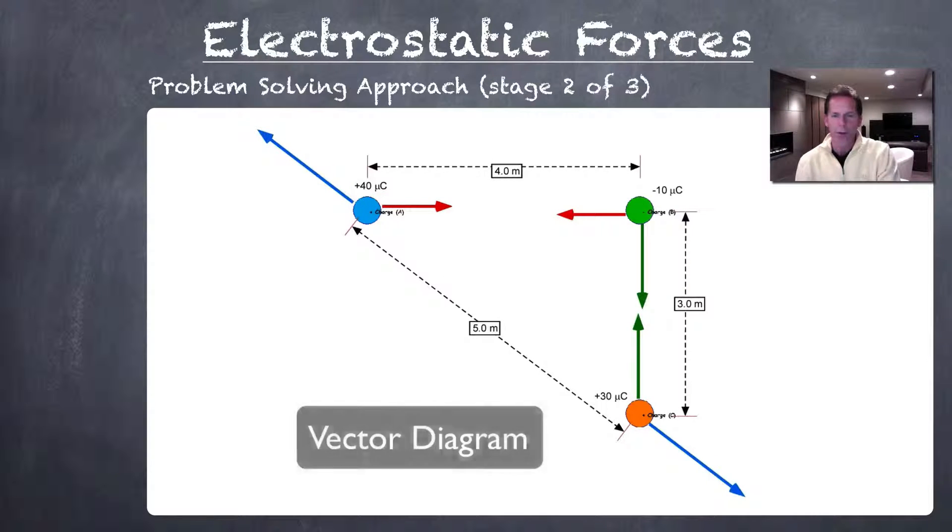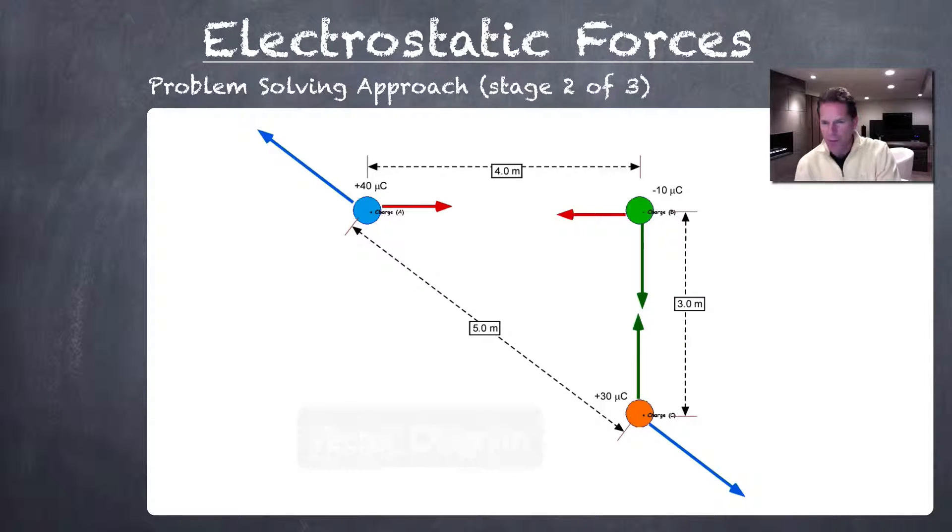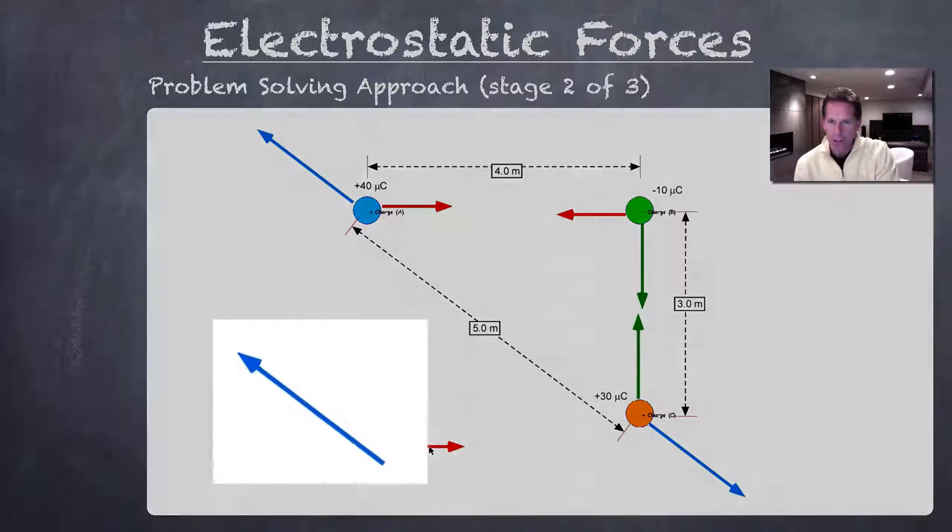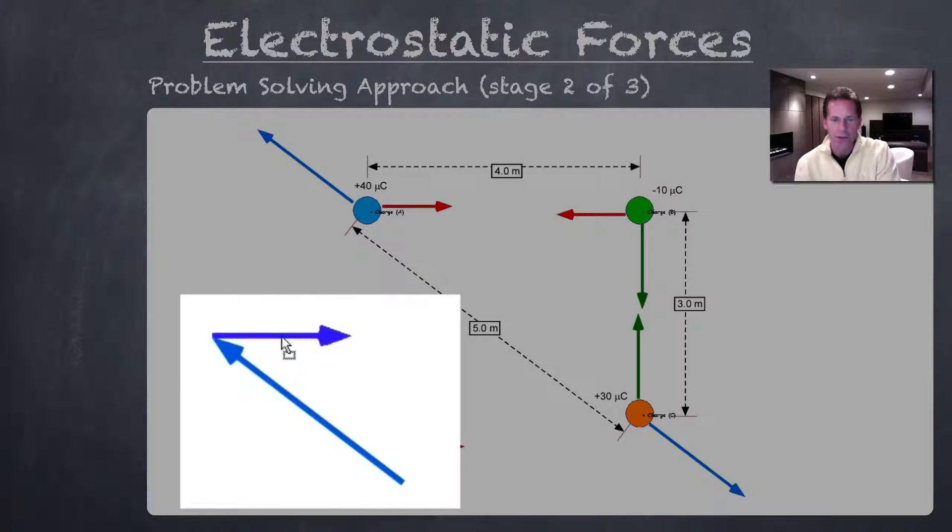Let's look at the more complicated situation where we're going to create a vector diagram based on this two-dimensional free body diagram we'd done with charges before. If we look at the 40 microcoulomb charge first, we have the two forces we need to combine together. We add the two vectors tip to tail. Our net force will be from where we started in this vector diagram to where we ended, in a direction just slightly west of north.